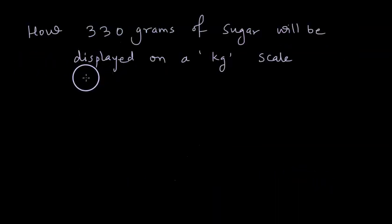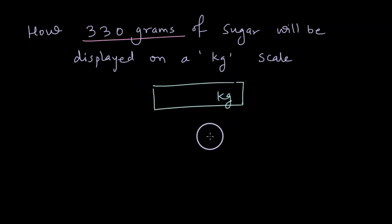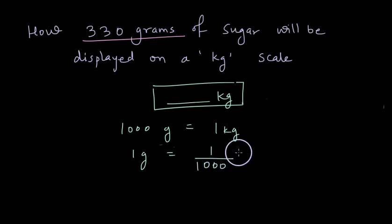So let's solve another question. How 330 grams of sugar will be displayed on a kilogram scale? So this kilogram scale is like this. The unit that it uses is kg and I want to know what is the number that it will display if I buy 330 grams and the shopkeeper weighs it. Now let's remember 1000 gram is equal to 1 kilogram. If I divide both sides by 1000, I can write 1 gram is equal to 1 by 1000 kilogram.